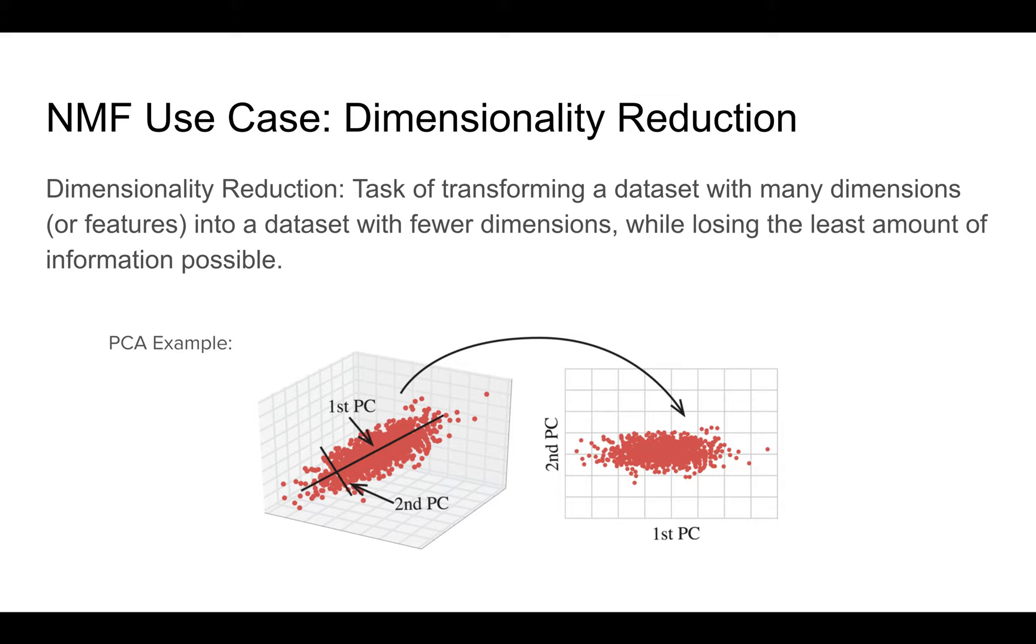So let's talk about a big use case of NMF, and that's dimensionality reduction. Dimensionality reduction is the task of transforming a data set with many dimensions or features, those are two of the same, they mean the same thing, into a data set with fewer dimensions. So we want to do this while losing the least amount of information possible. And the reason for this is because there's going to be some information loss. As you can see, we already know a dimensionality reduction method, that's PCA.